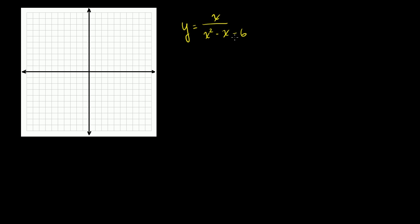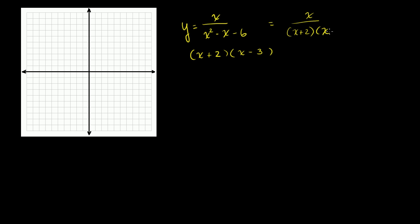What two numbers, when I take their product, give me negative 6, and when I add them up, I get negative 1? They have to be of different signs. A 2 and a 3 seem close, one apart. I want to subtract the larger number because when I add them I get a negative. So x minus 3 times x plus 2 works: negative 3x plus 2x is negative x. So this is equal to x over x plus 2 times x minus 3.